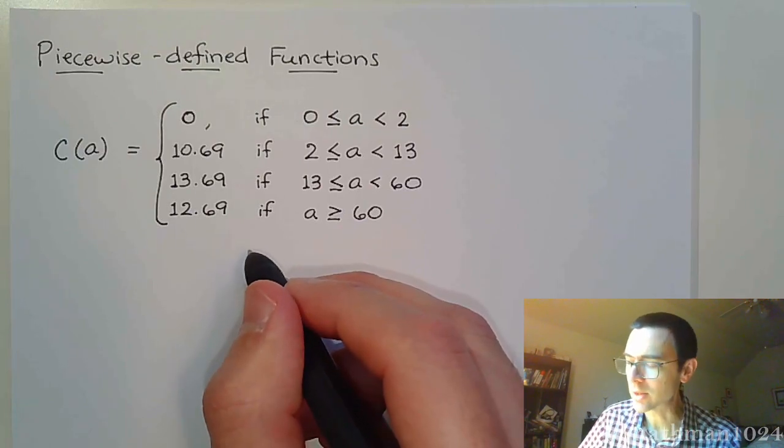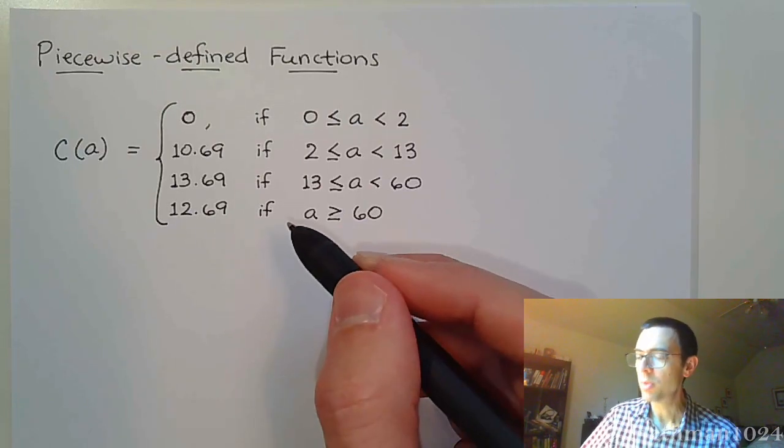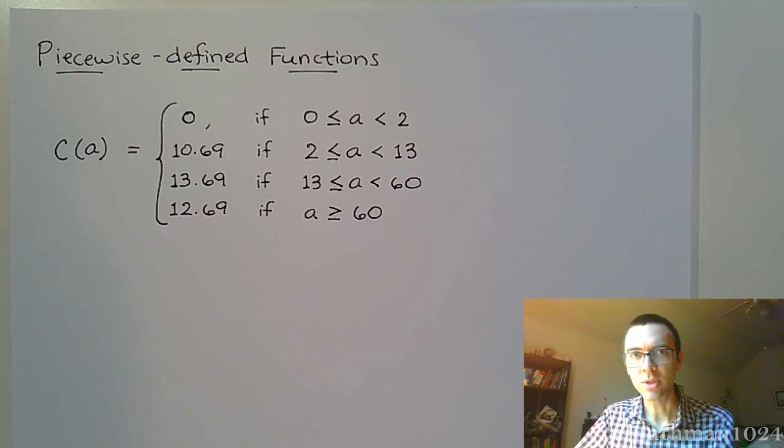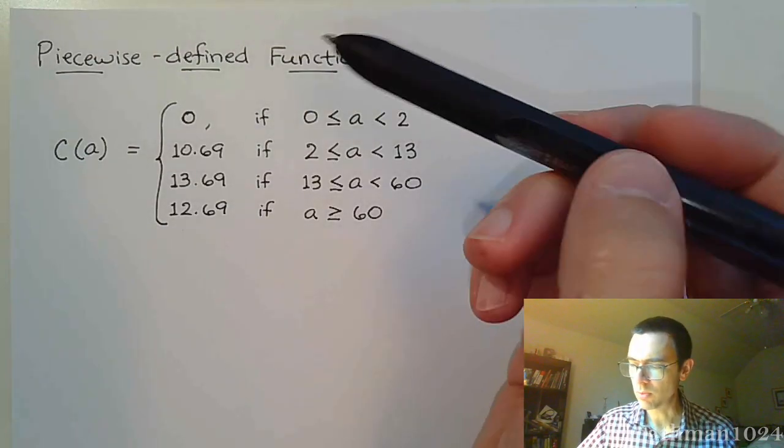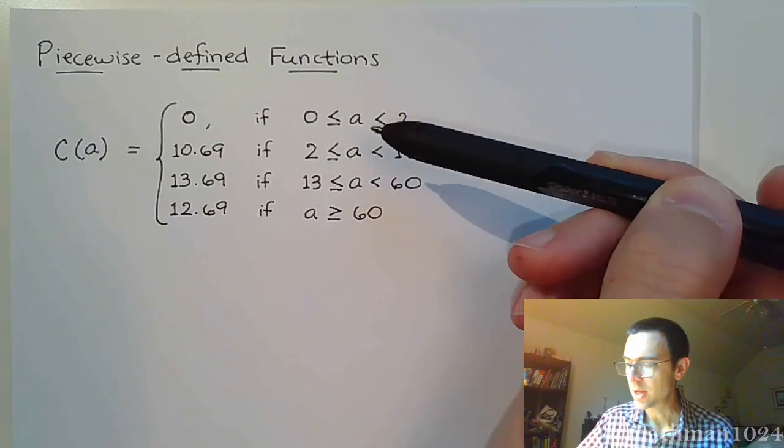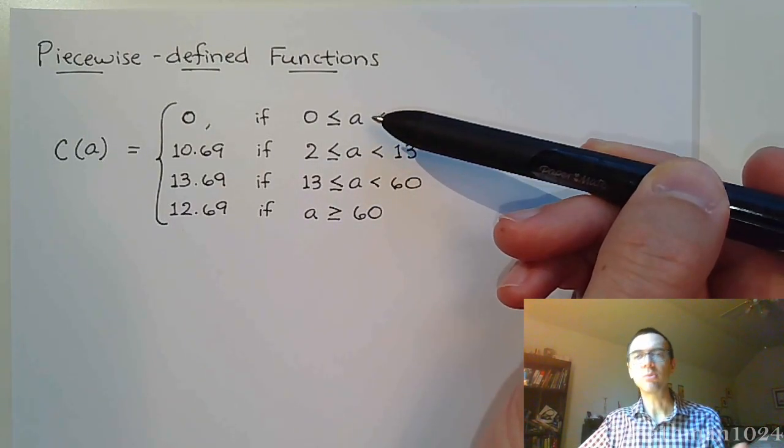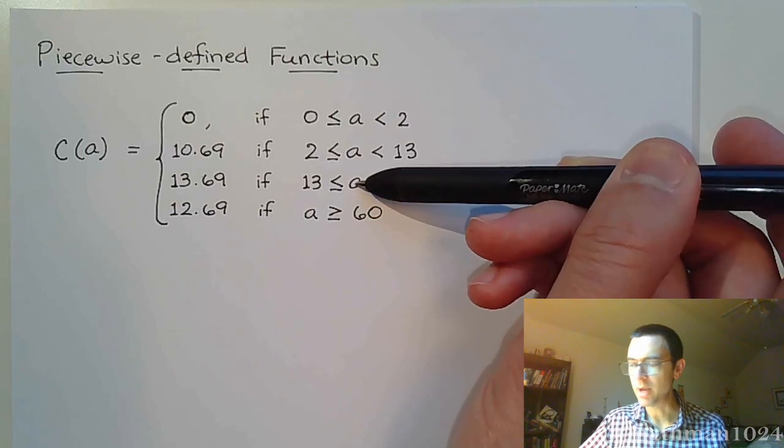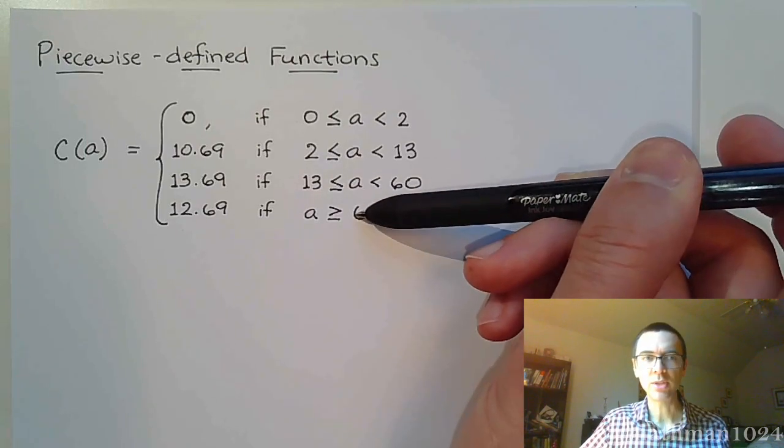And then anybody who is 60 or over will pay $12.69 because they get that big dollar discount per ticket. But the thing is, every person that goes into the theater is only going to pay one price per person.